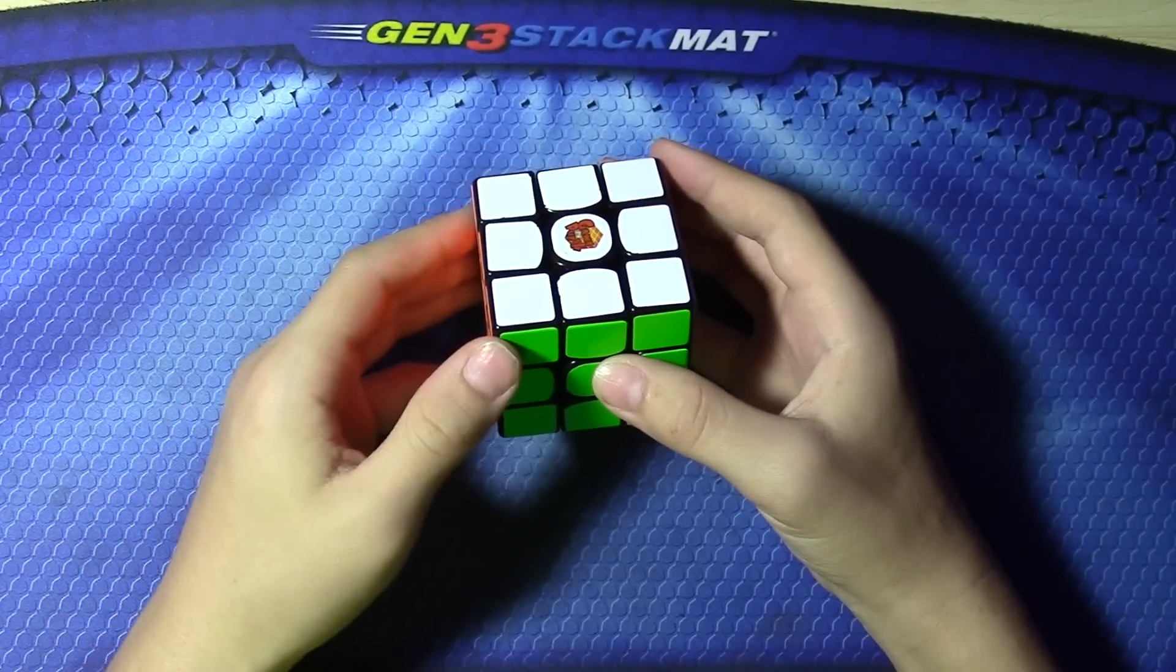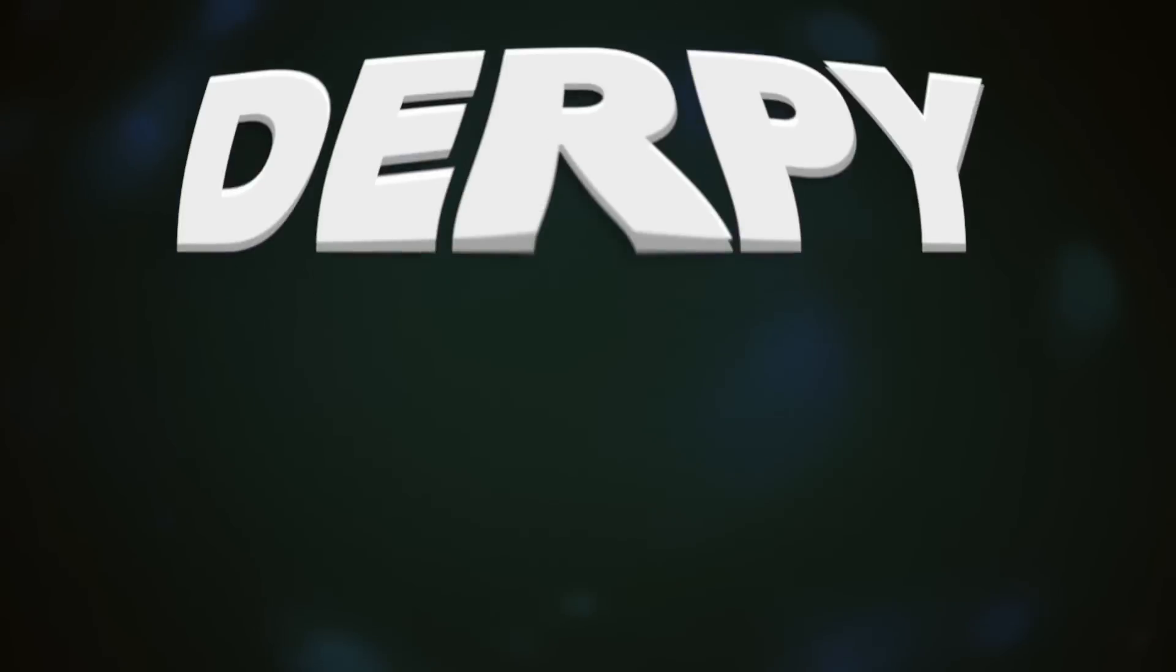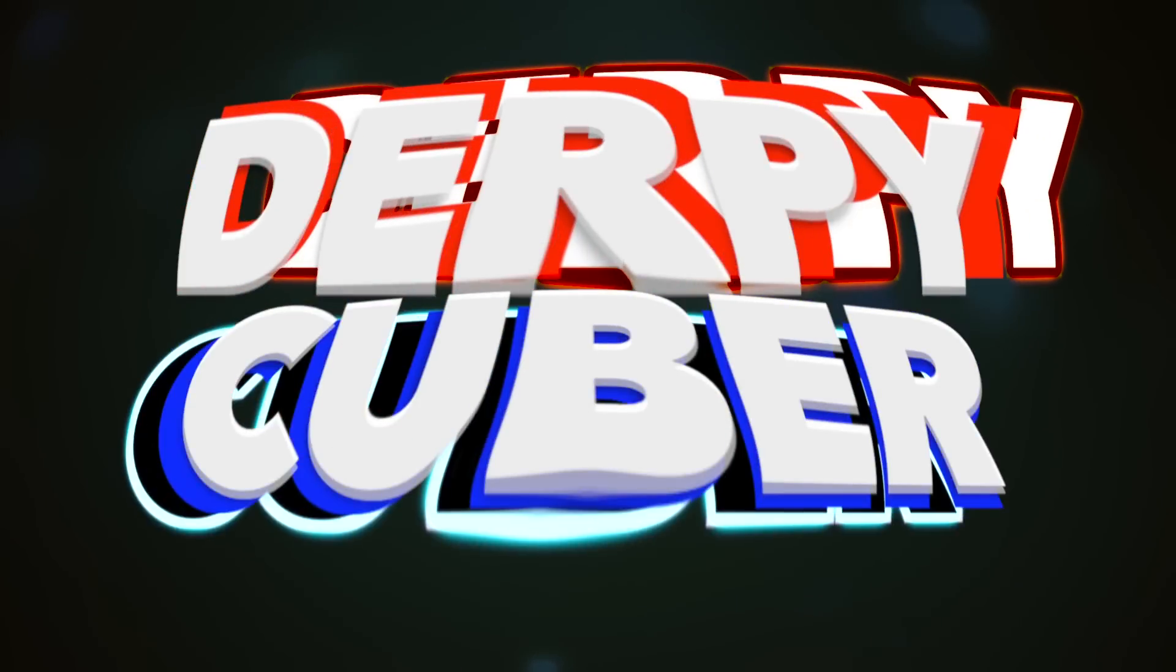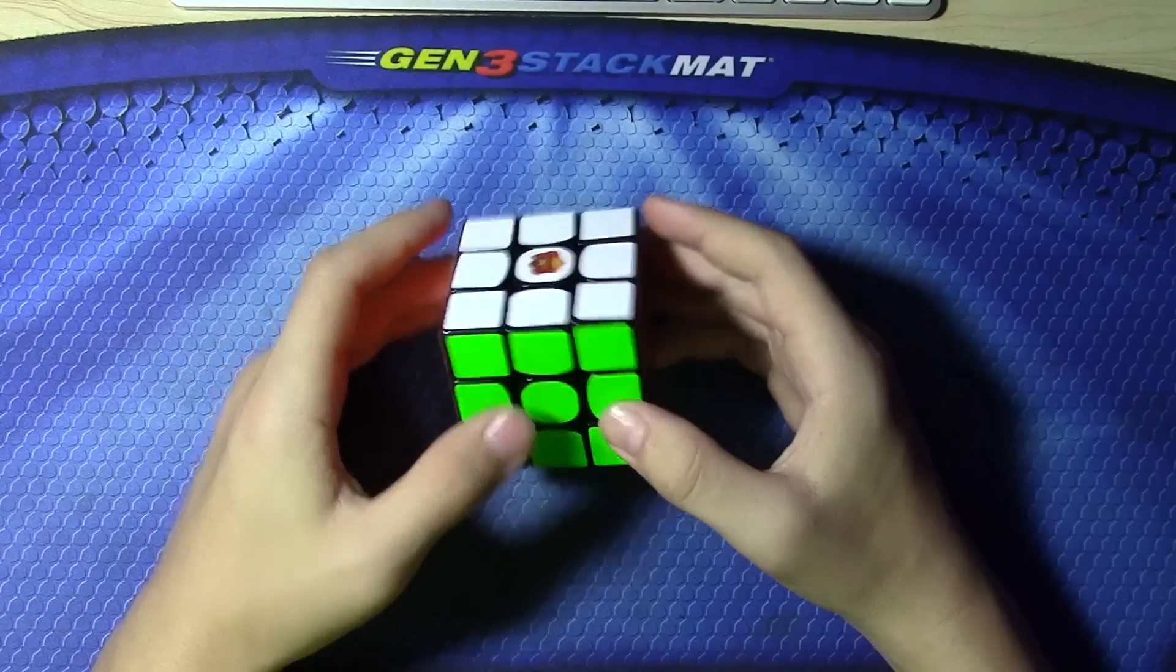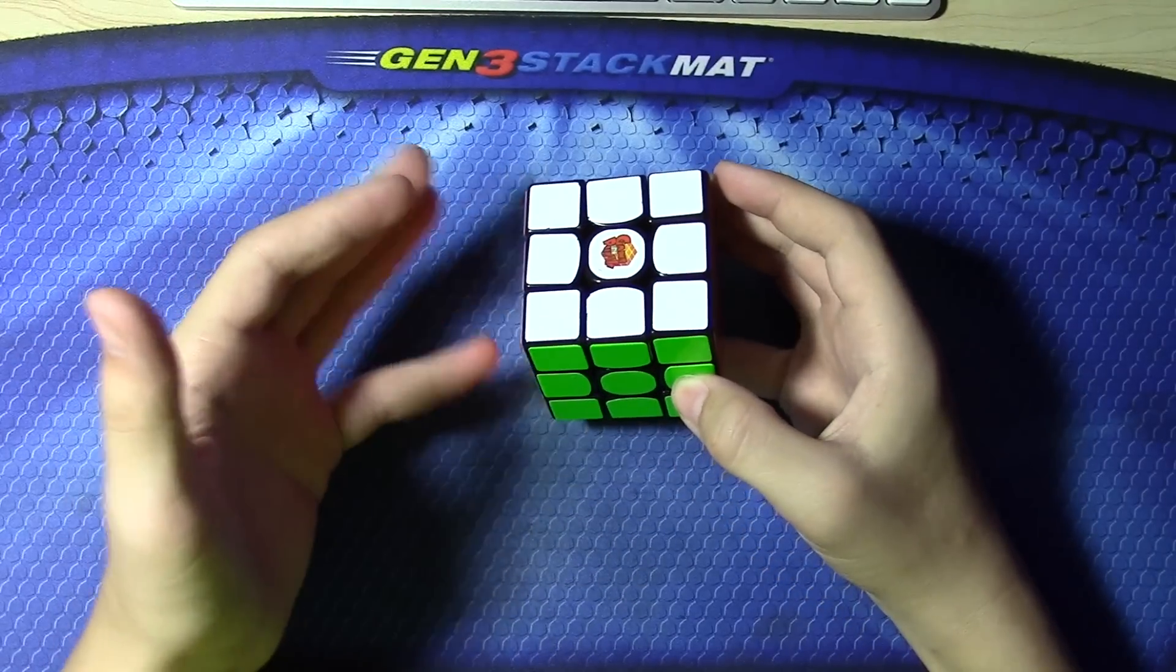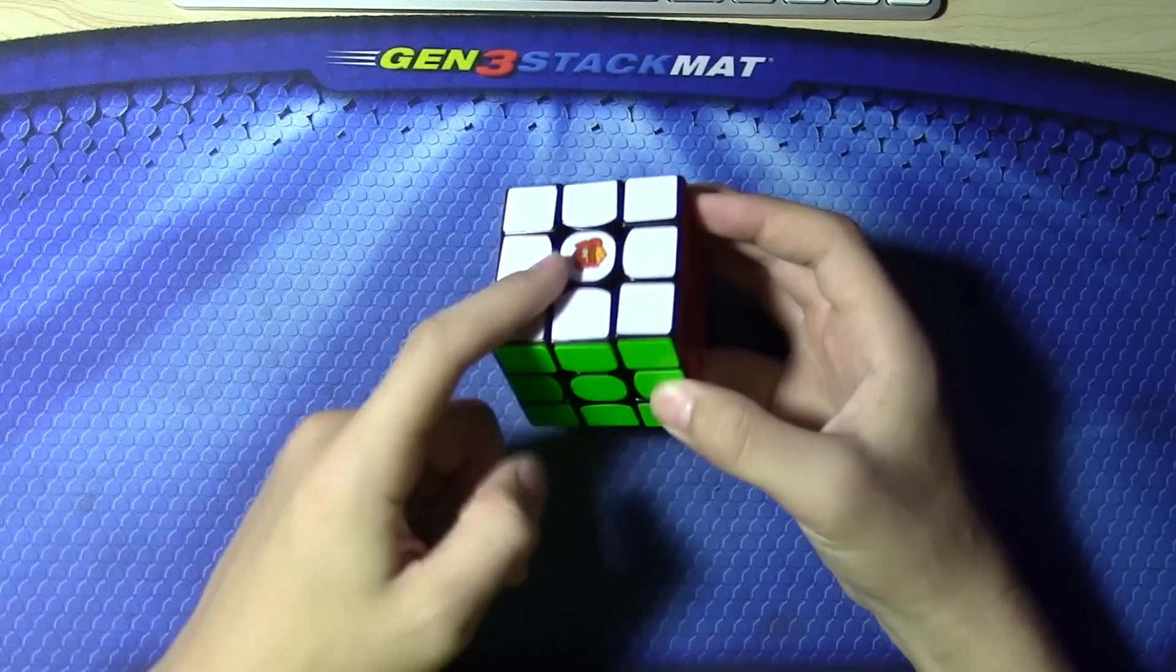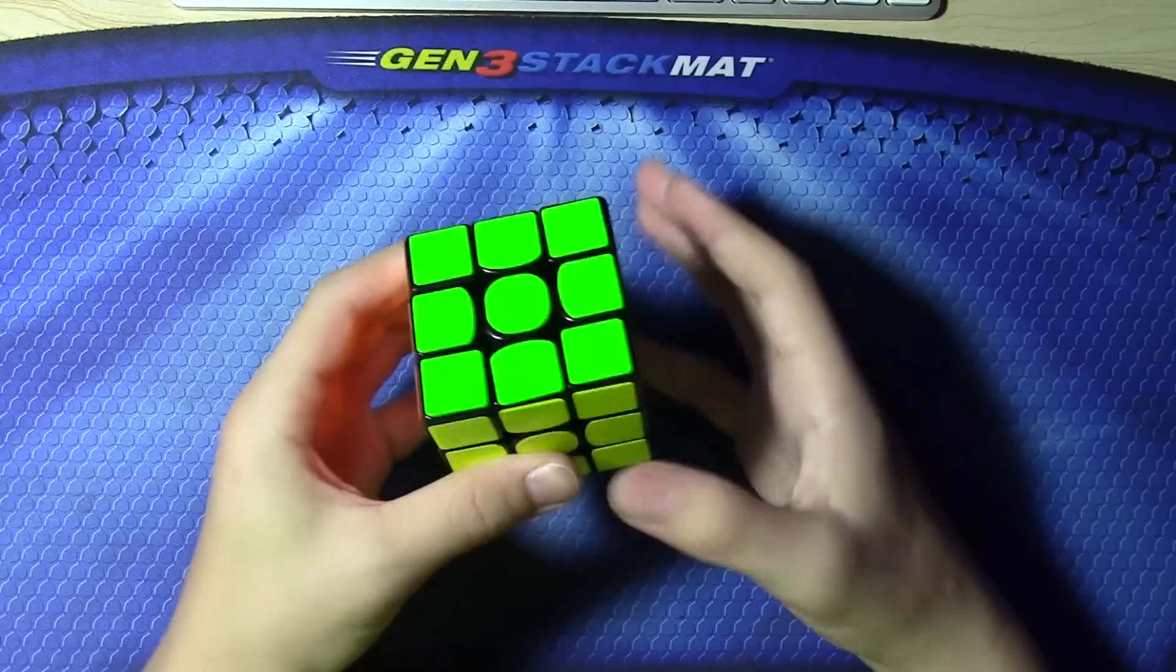Hey guys, as requested, I'm going to do some 3x3 walkthrough solves. So let's get started. I solve on white and yellow, and I'm going to scramble with green on front and white on top. Yeah, let's get started.